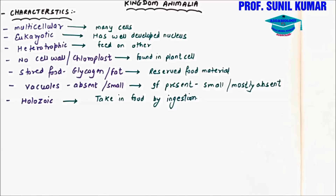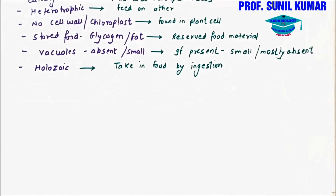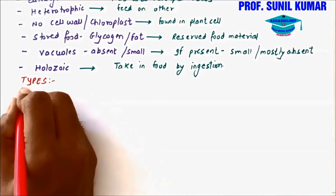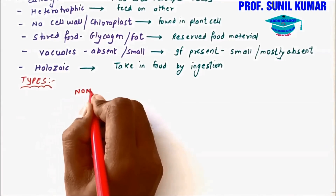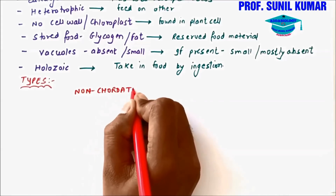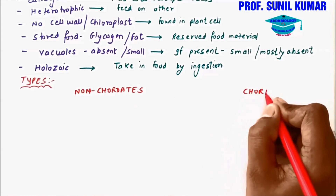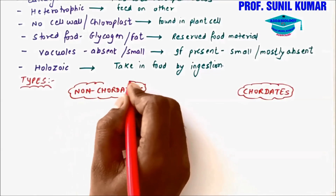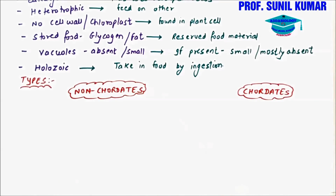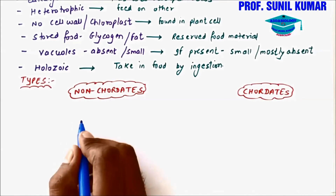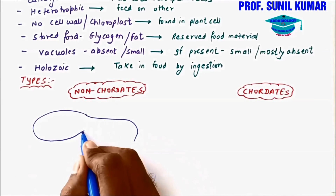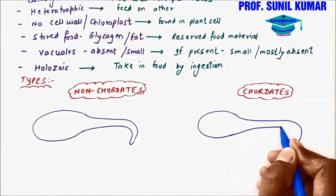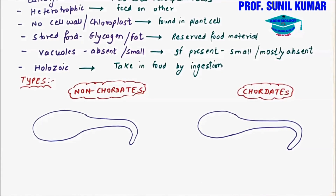When we try to classify animals, there are two types: non-chordates and chordates. With the help of a diagram, I will be explaining the difference and characteristics between non-chordates and chordates.